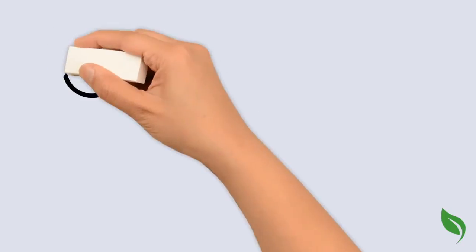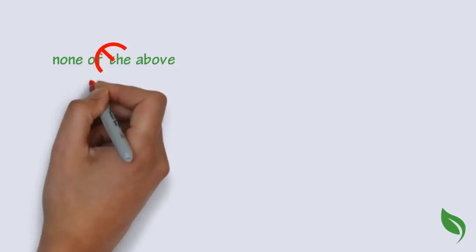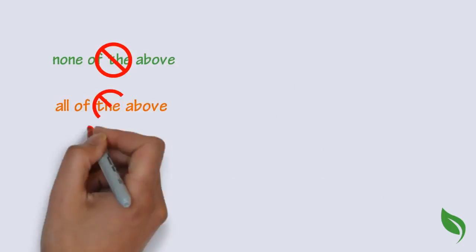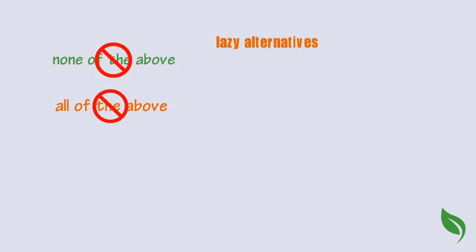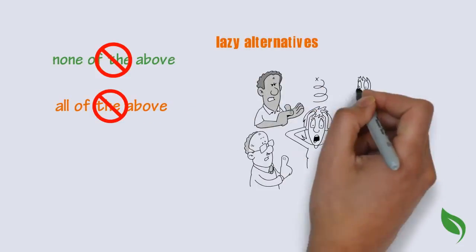Number seven. Limit your use of the alternatives, none of the above and all of the above. These are lazy alternatives and generally frustrate test takers needlessly.